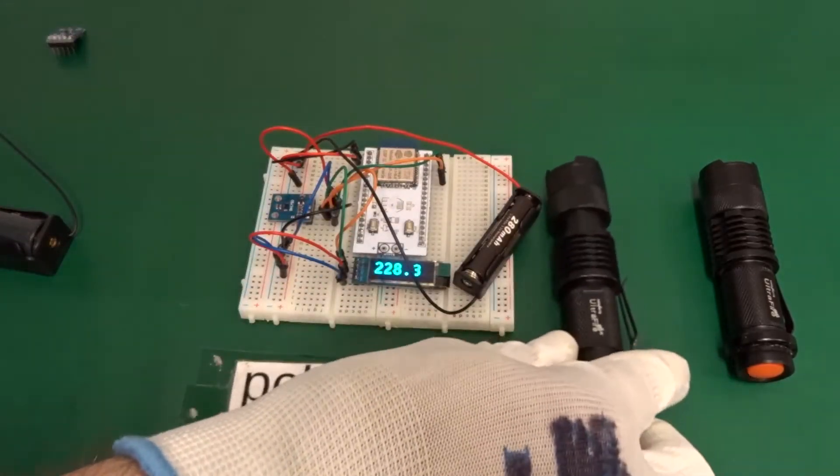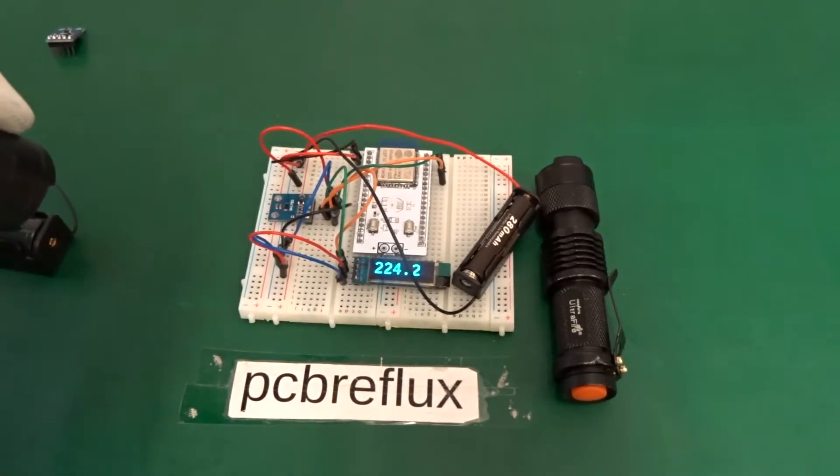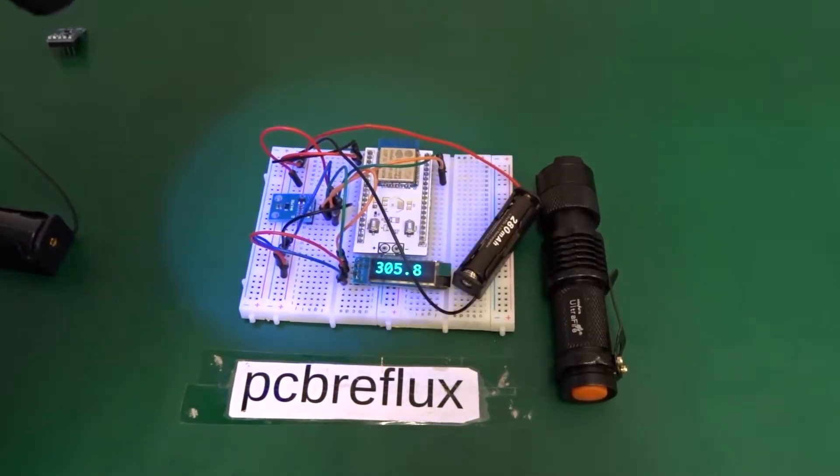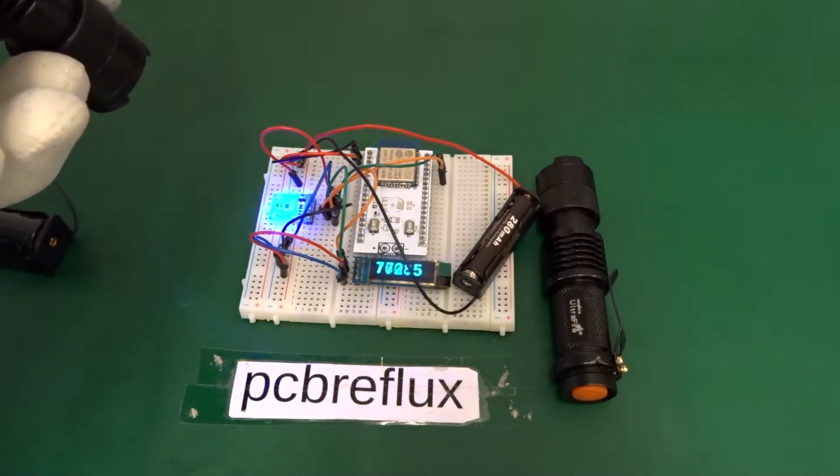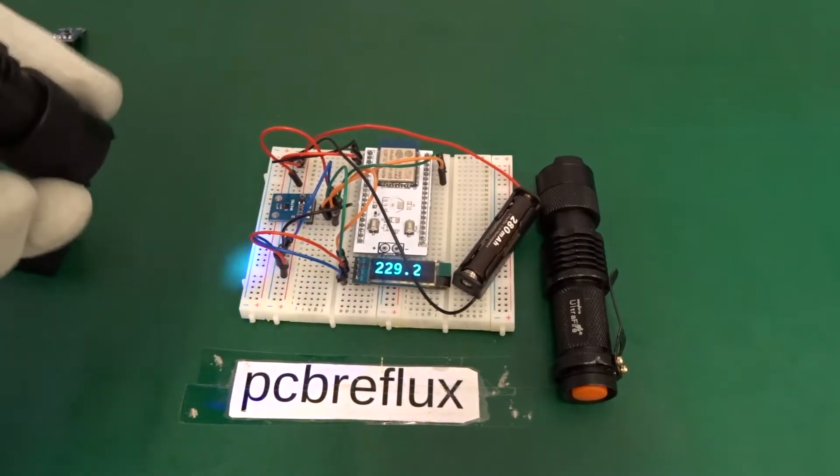I have also an ultraviolet or UV lightening torch and we can test this on the ambient light sensor. As you see here, even if we focus the beam to a direct spot, the reading is not as high as with a normal white LED.